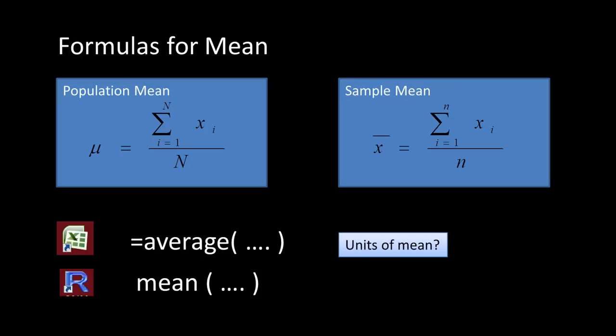In Excel, you can use the AVERAGE function to calculate the mean. In R, you can use the mean() function. The symbol used for sample mean is X-bar — X with a bar on top — indicating you're talking about a sample and not the population.